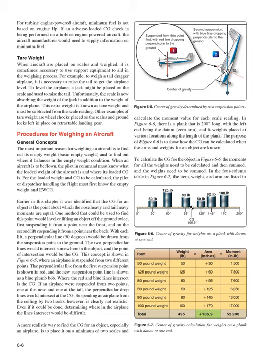One method to find the CG involves lifting an object off the ground twice—first suspending it from a point near the front and second from a point near the back. With each lift, a perpendicular line (90 degrees) is drawn from the suspension point to the ground. The two lines intersect at the CG, as shown in Figure 6-5. A more realistic way is to place the aircraft on a minimum of two scales and calculate the moment value for each scale reading. In Figure 6-6, a 200-inch plank with six weights at various locations illustrates how CG can be calculated when arms and weights are known.